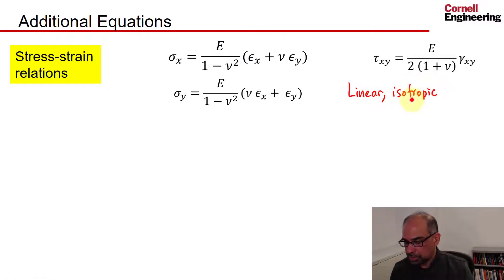Isotropic ensures we need only two material constants: Young's modulus and Poisson's ratio. Linear assumes that stress is directly proportional to strain. But now we have three equations and have added three unknowns: epsilon x, epsilon y, and gamma xy, the three strains.